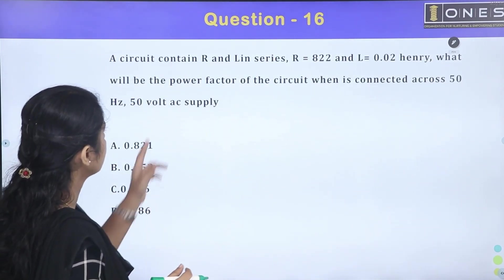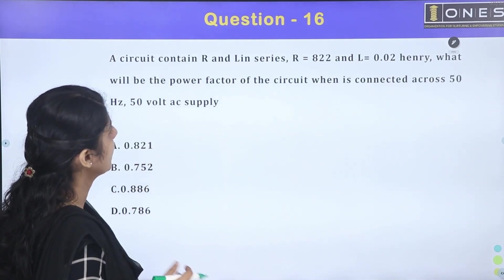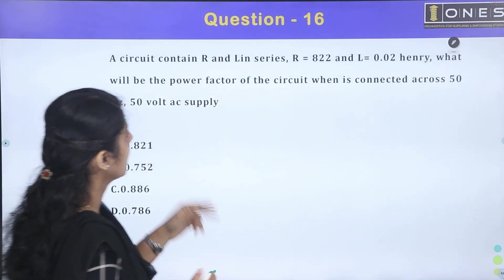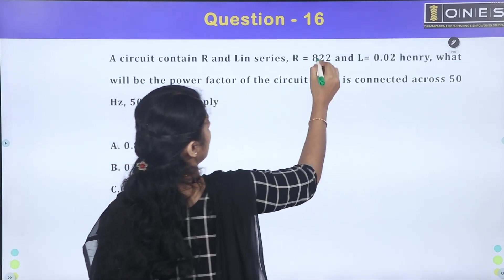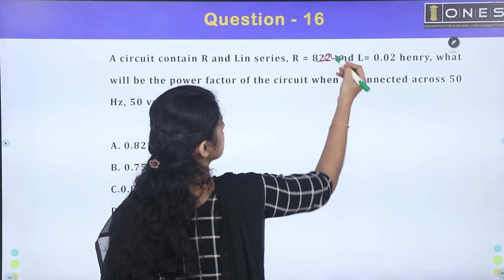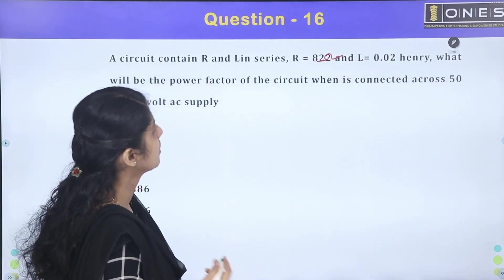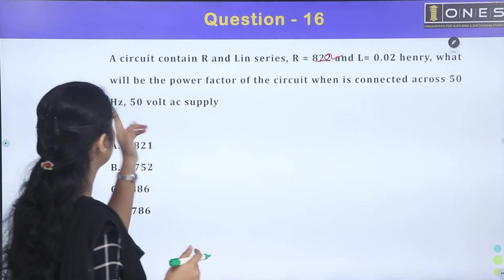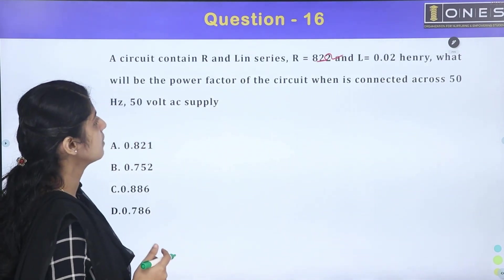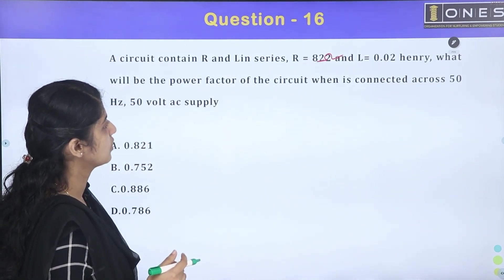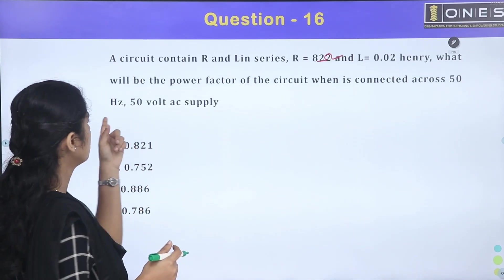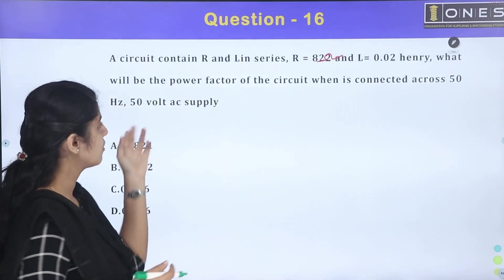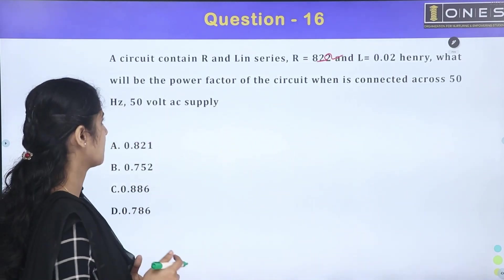A circuit contains R and L in series. R is equal to 8 ohm and L is equal to 0.02 henry. What will be the power factor of the circuit when it is connected across a 50 hertz, 50 volt AC supply?